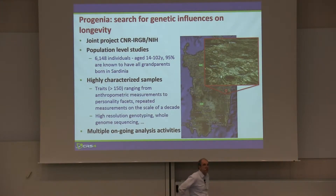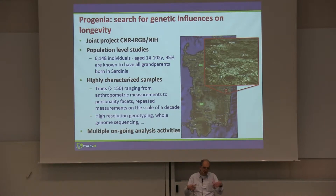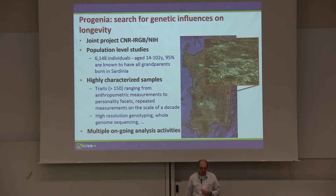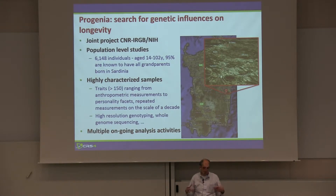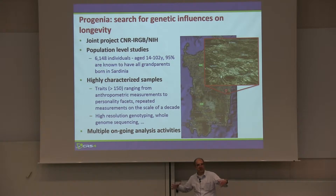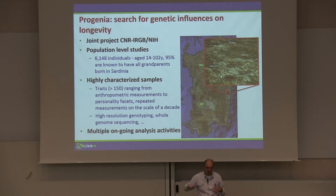The other example is Progenia, a joint study between the NIH — specifically the NIA, the National Institute of Aging — and CNR, where they are studying a particular population in a valley in the middle east of Sardinia. Differently from before, this is a place with a very long life expectancy — one of the places in the world with very good life expectancy. They took the whole population of about 6,000 people and have been studying hundreds of traits of various kinds.